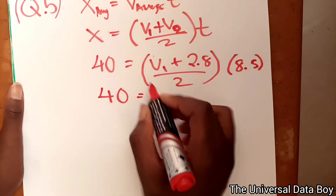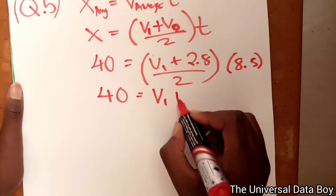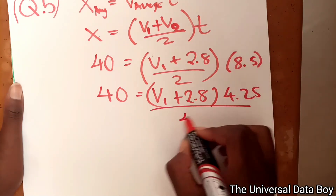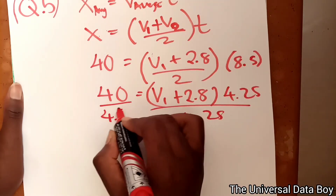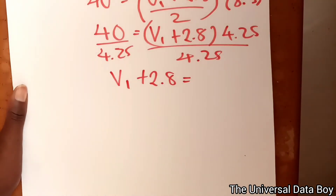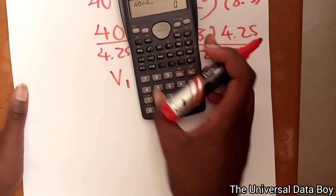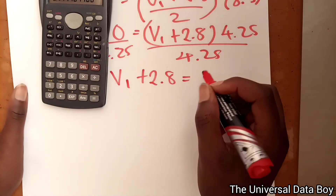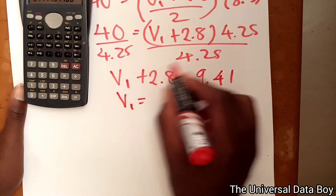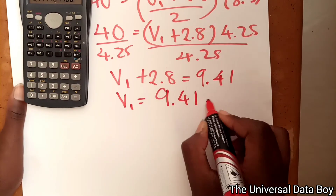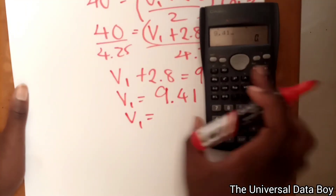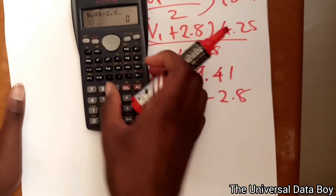The time is 8.5, so dividing by 2 gives 4.25. Dividing both sides by 4.25, we get v1 plus 2.8 equals 40 divided by 4.25, which is 9.41. Therefore v1 equals 9.41 minus 2.8, giving us 6.61 meters per second.